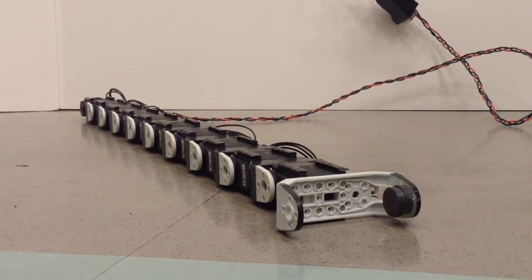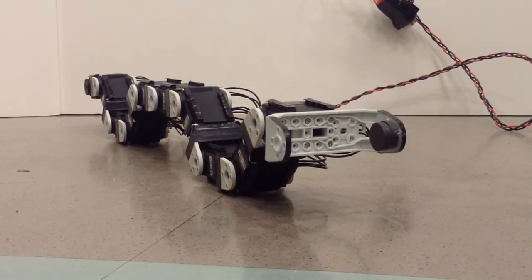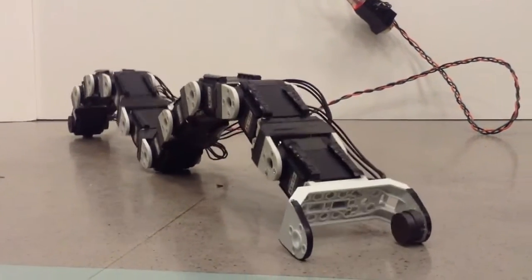The rolling method of locomotion was compared to a worm style of locomotion. For the worm method, curves were moved down the snake's body in sequence to move the robot forward or backward.